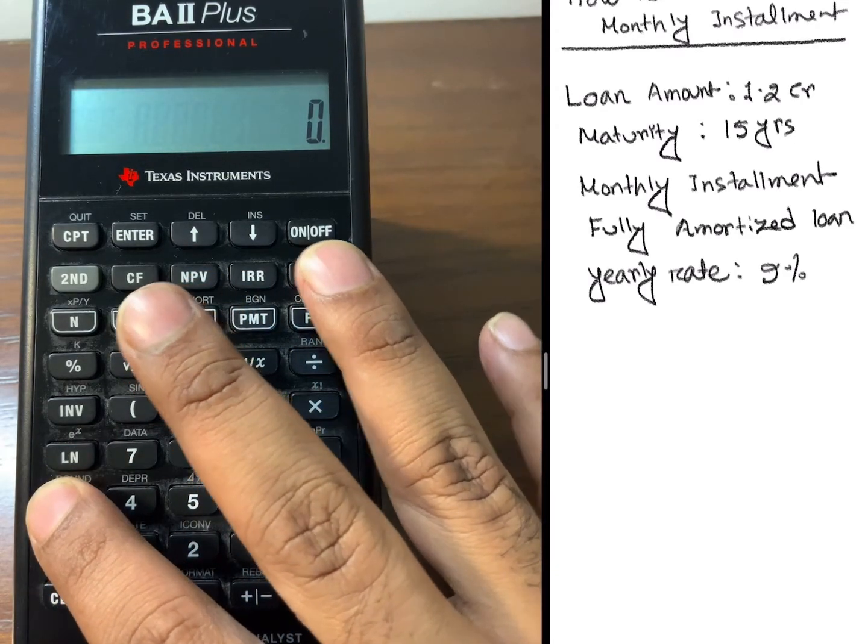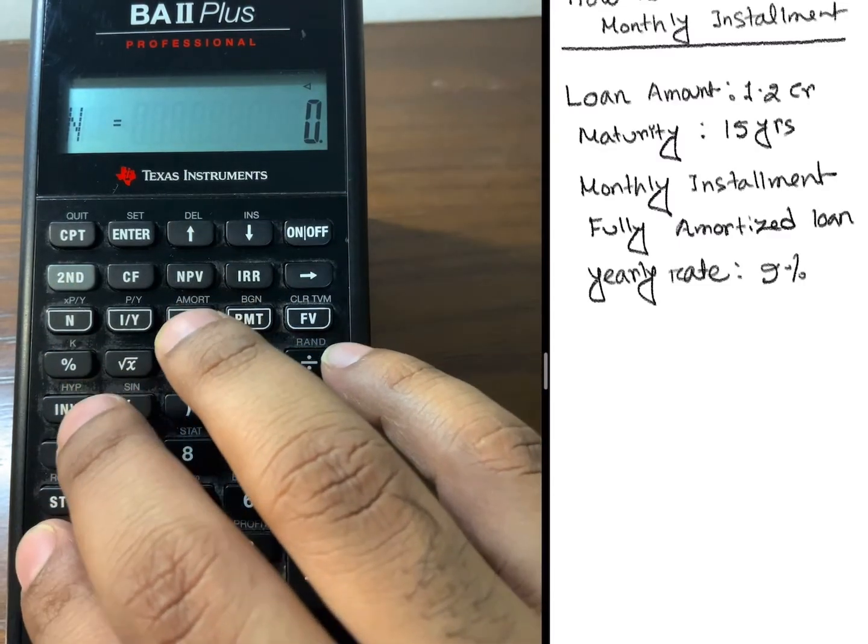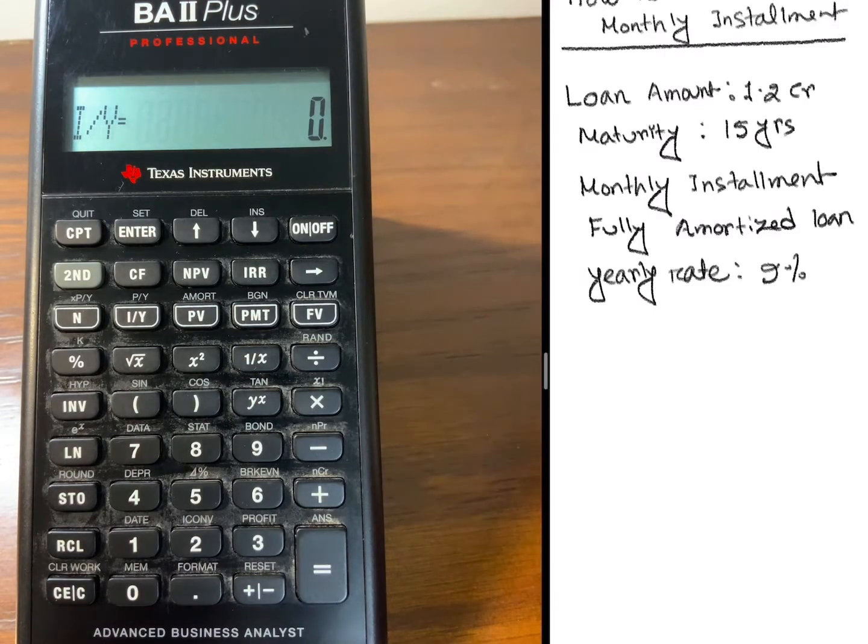You will press recall and then press N. You can see it's 0. You can press recall and press I by Y, 0. So whatever number was there previously, if you have done some math, all the numbers will be 0 once you clear the time value of money.